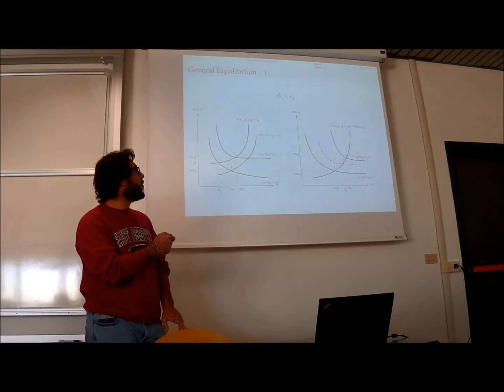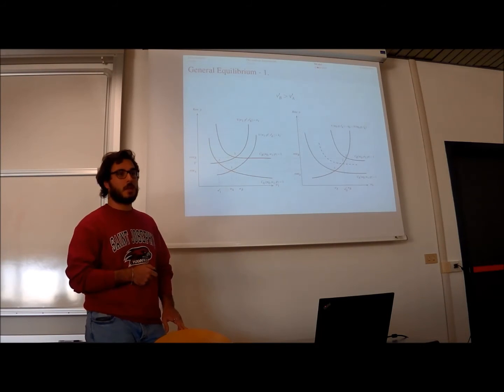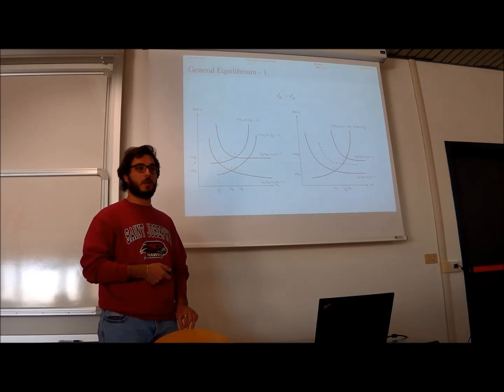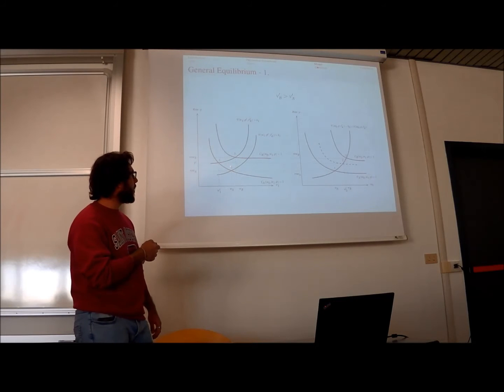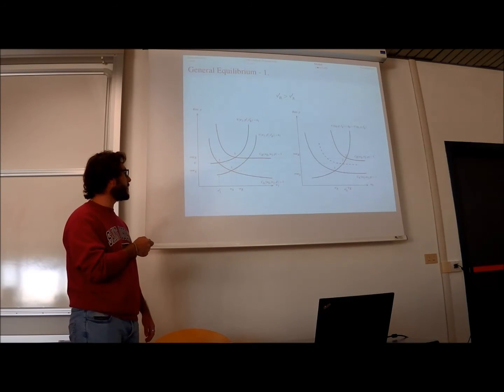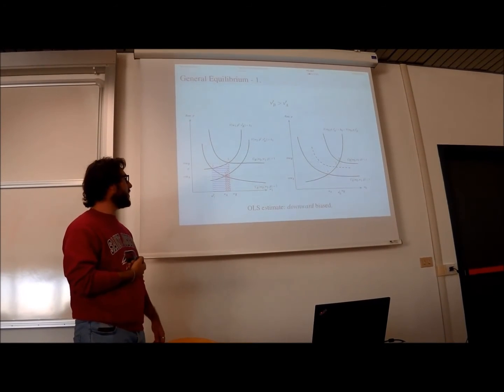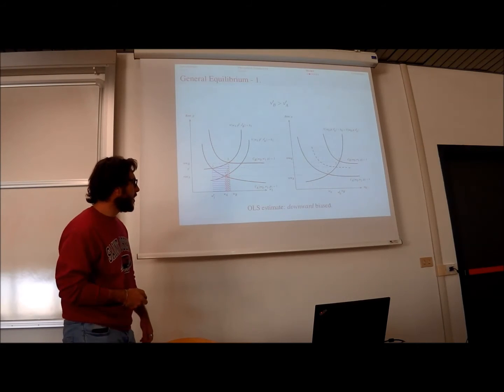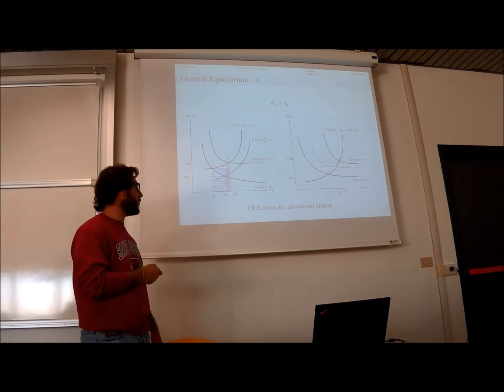These are valued by the educated workers. Starting from point one in equilibrium, we will see that educated workers will move to city B, so they shift here. The welfare effect perceived by society is the blue area. Because of this, we will probably have OLS estimates that will be downward biased.